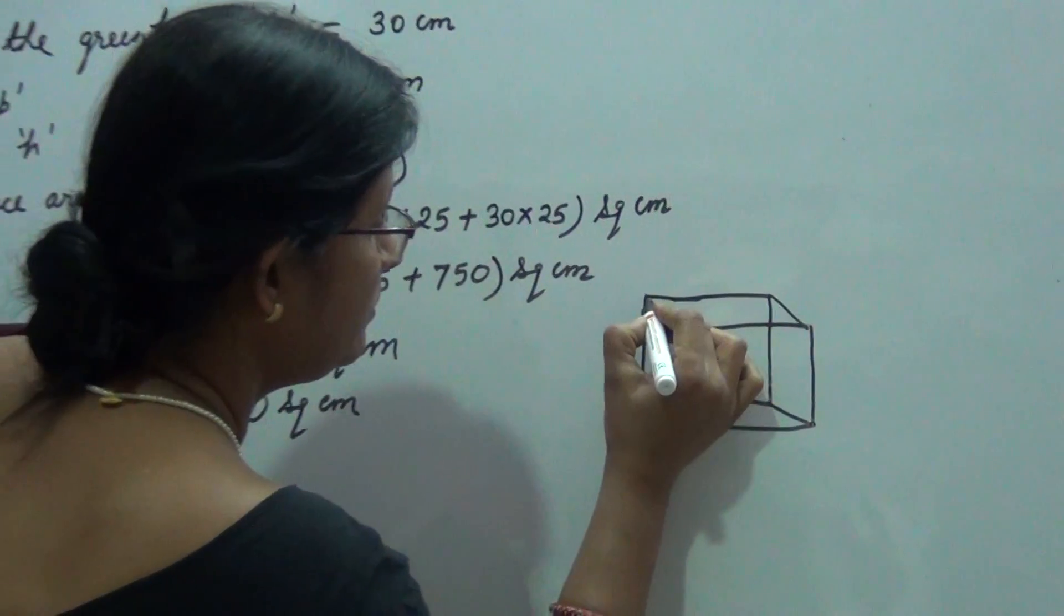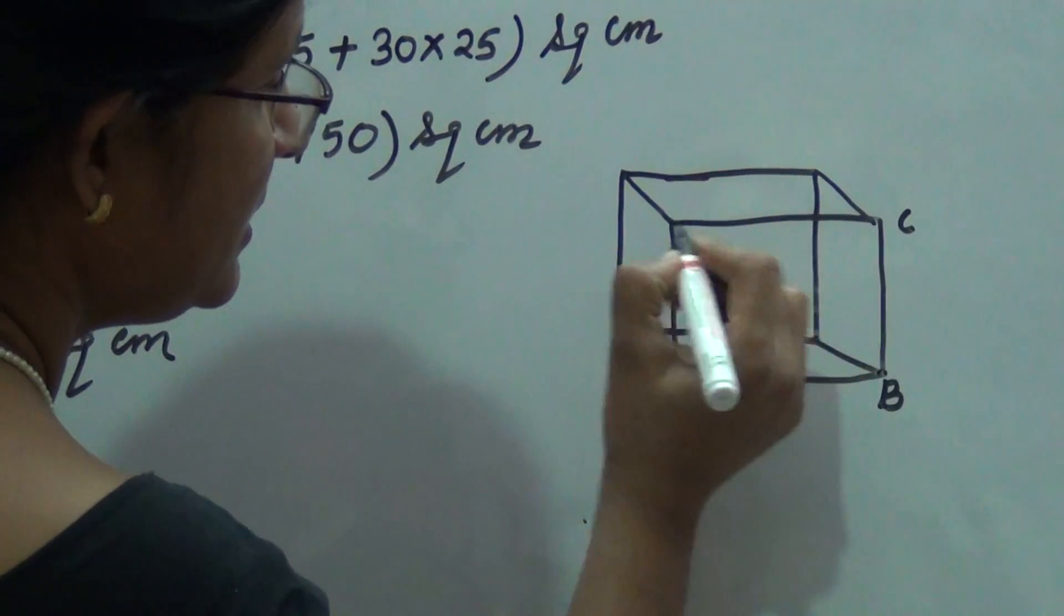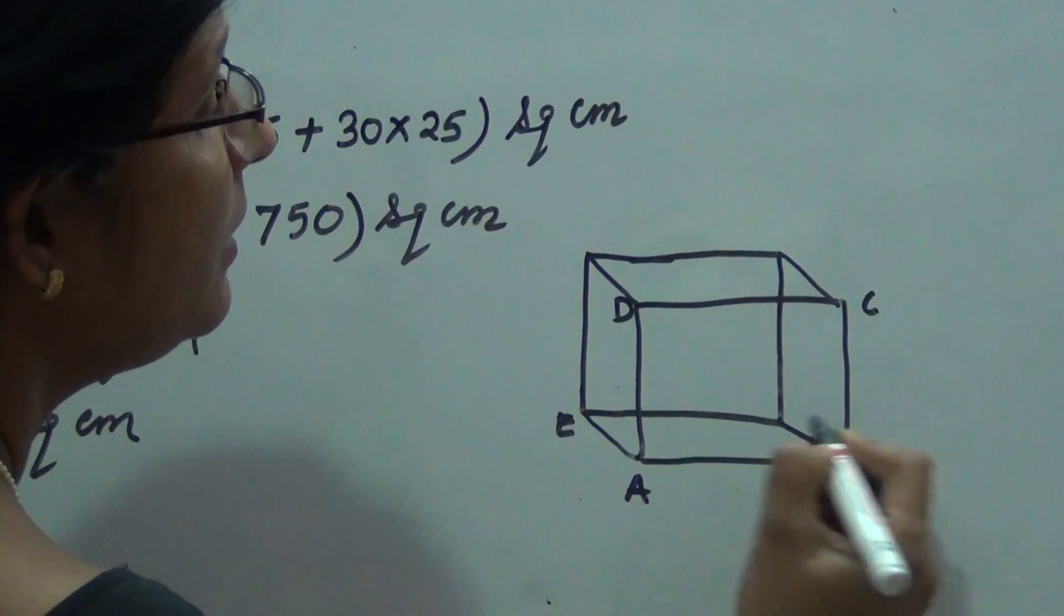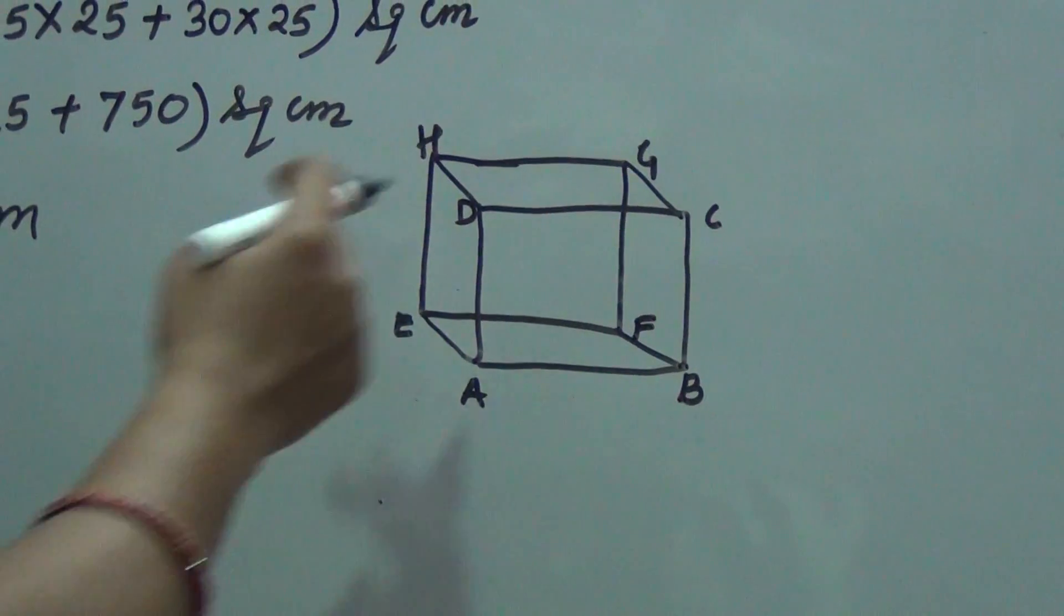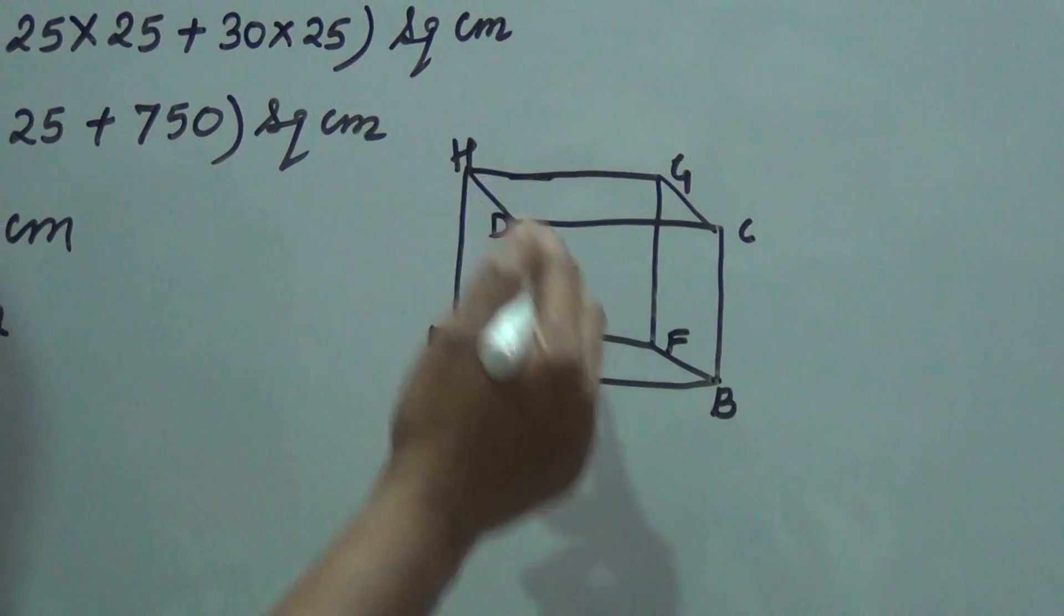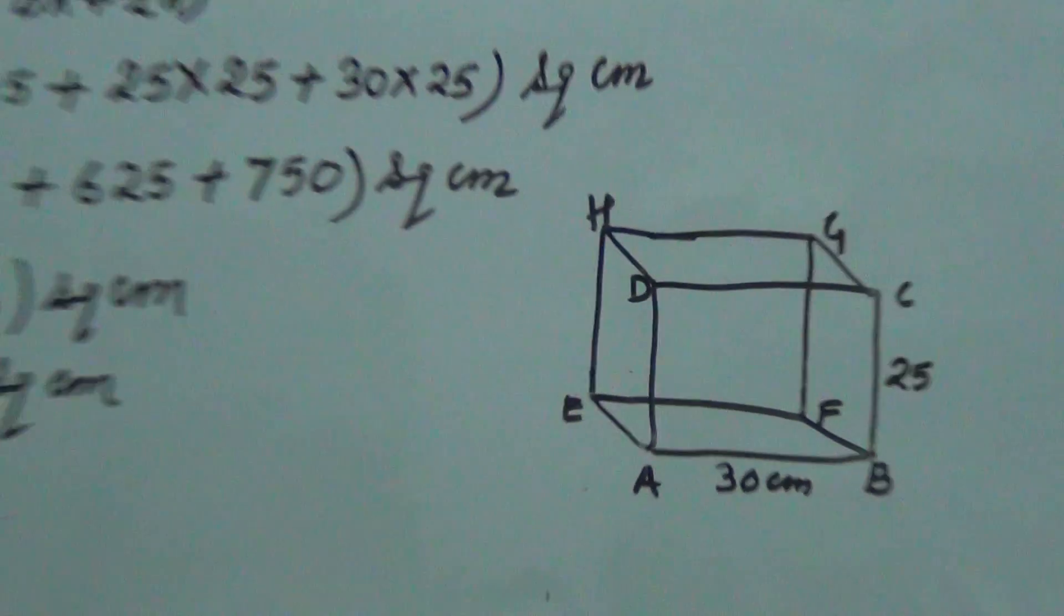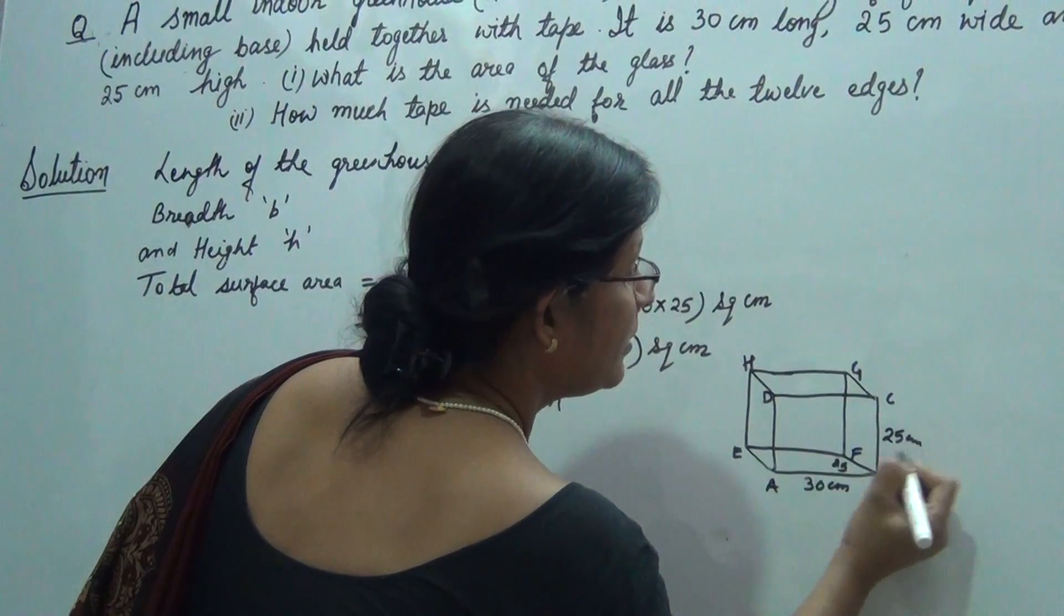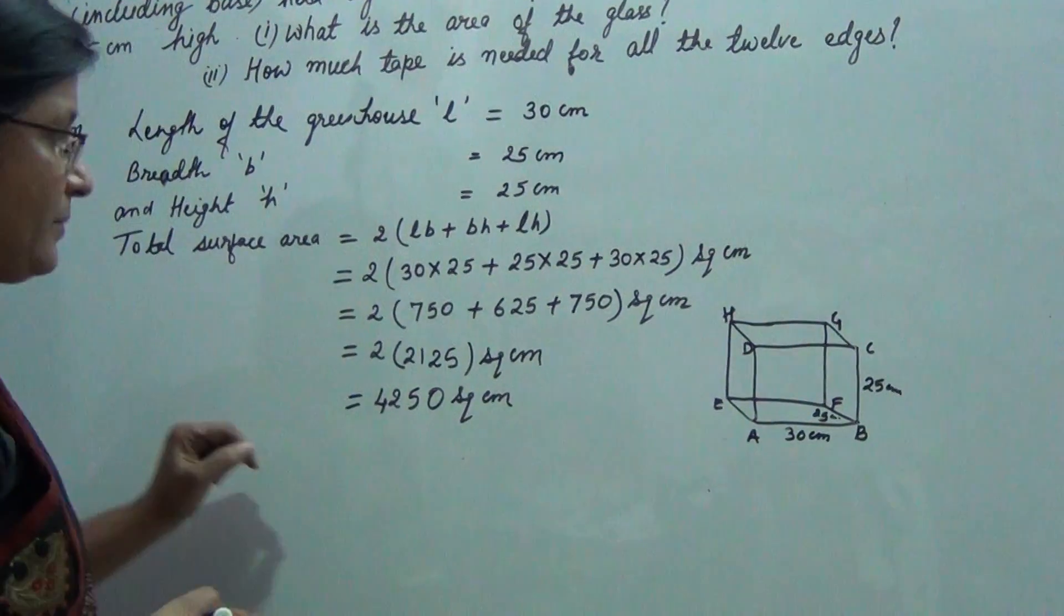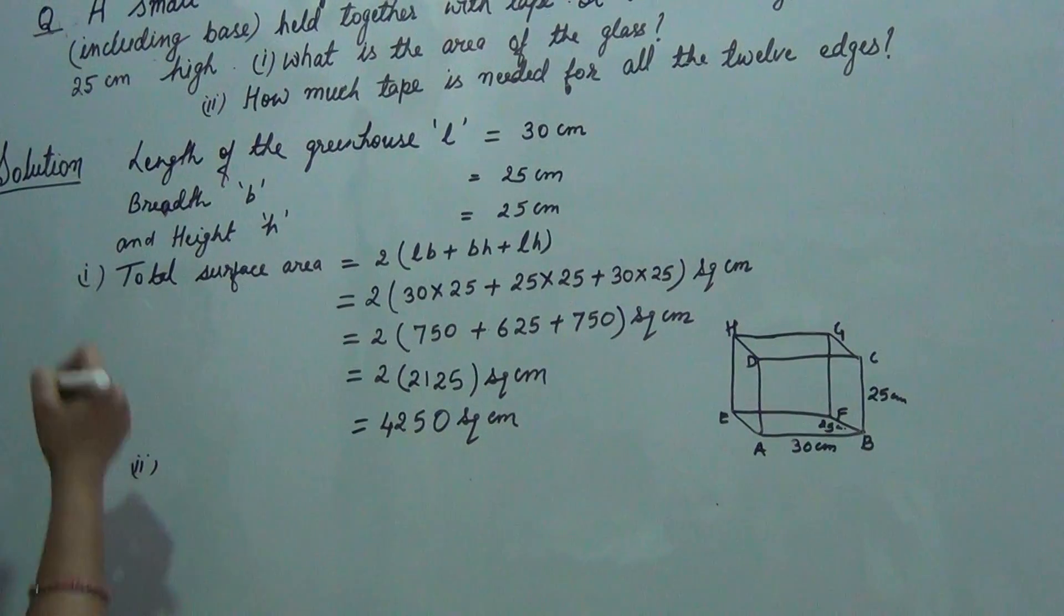Now children, as you know that A, B, C, D, E, F, G and H, so tape is used at the edges. Now edges, how many edges are in all? We already know that number of edges in a cuboid is 12, and we also know that each dimension is 4 times.